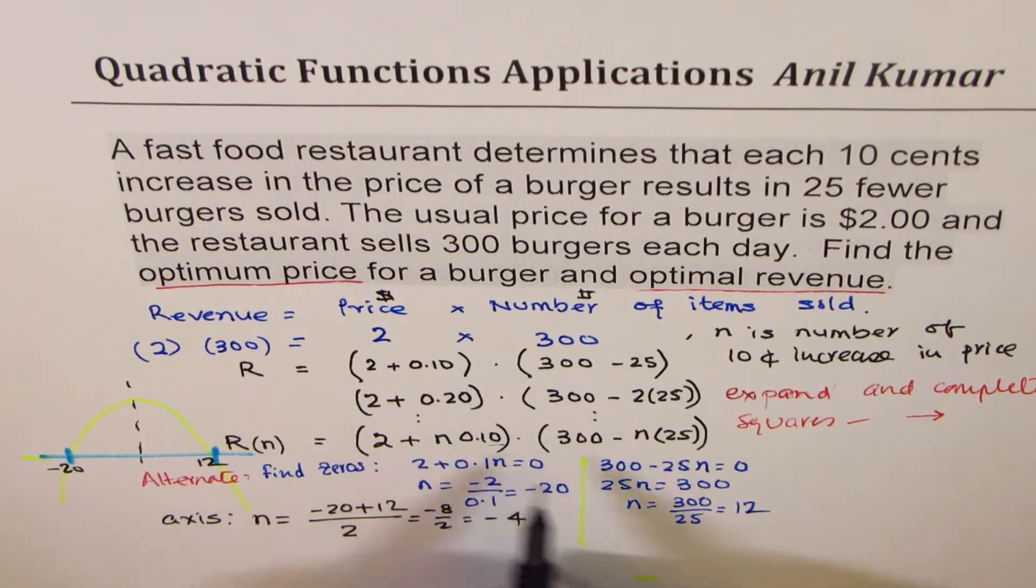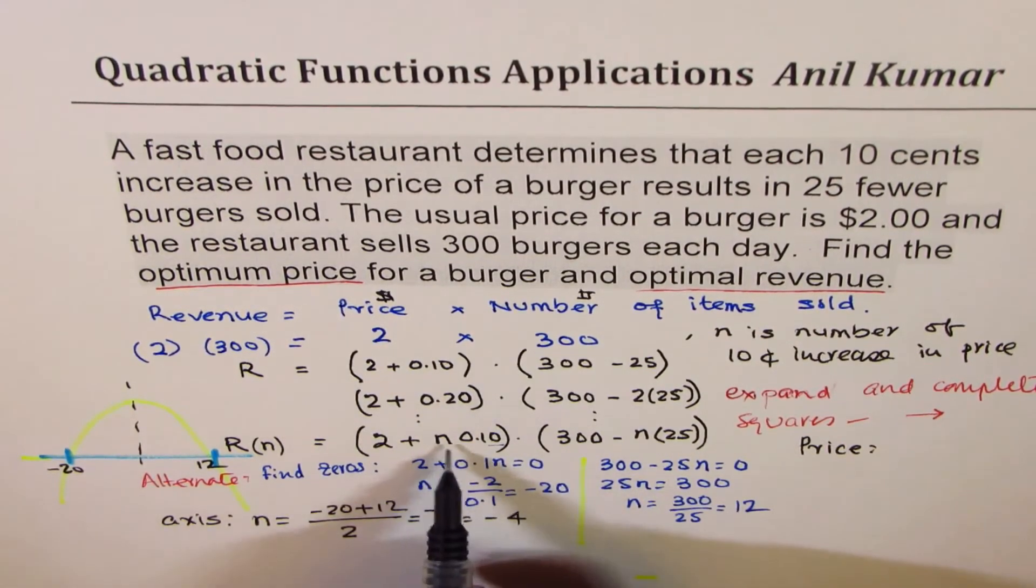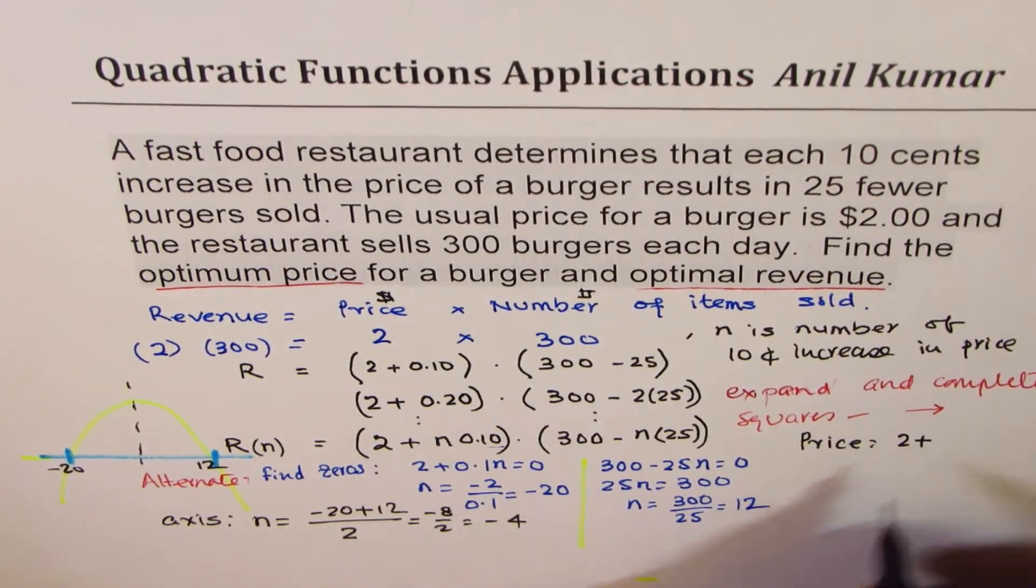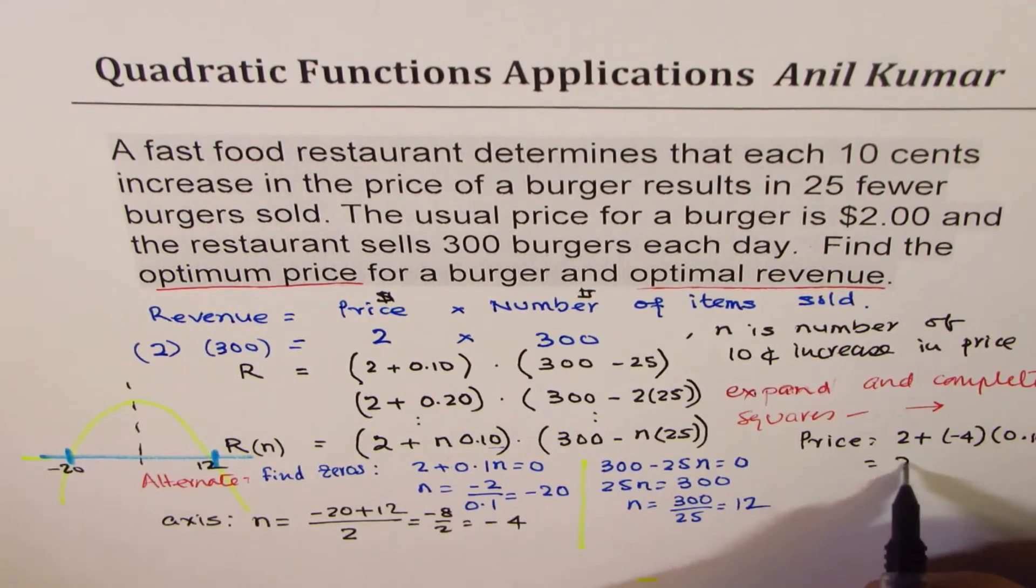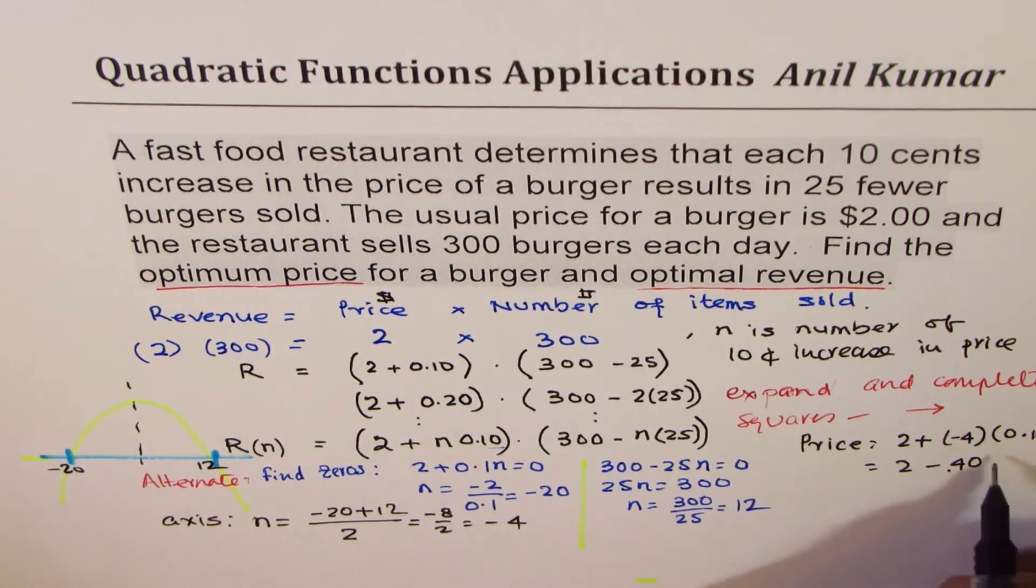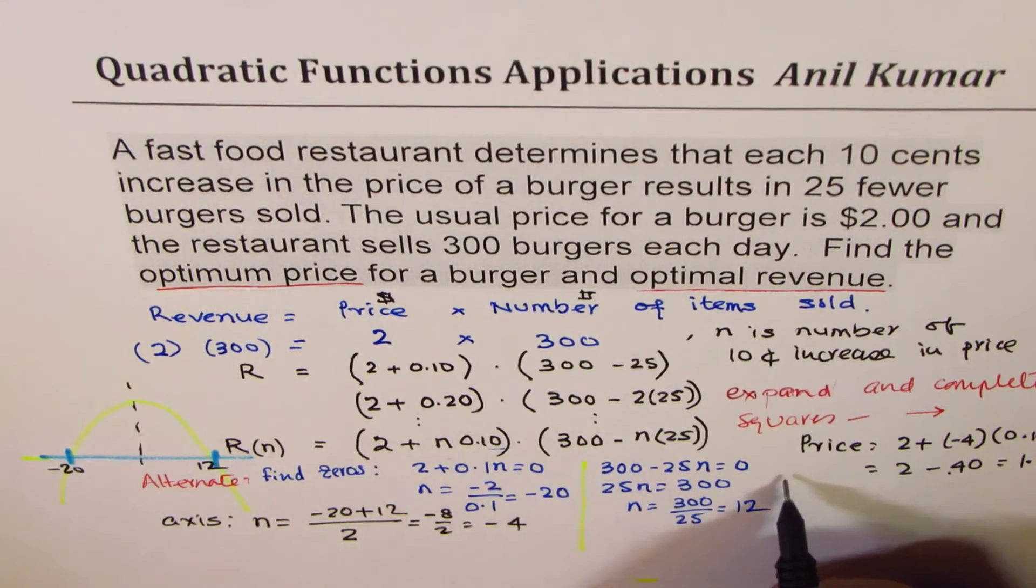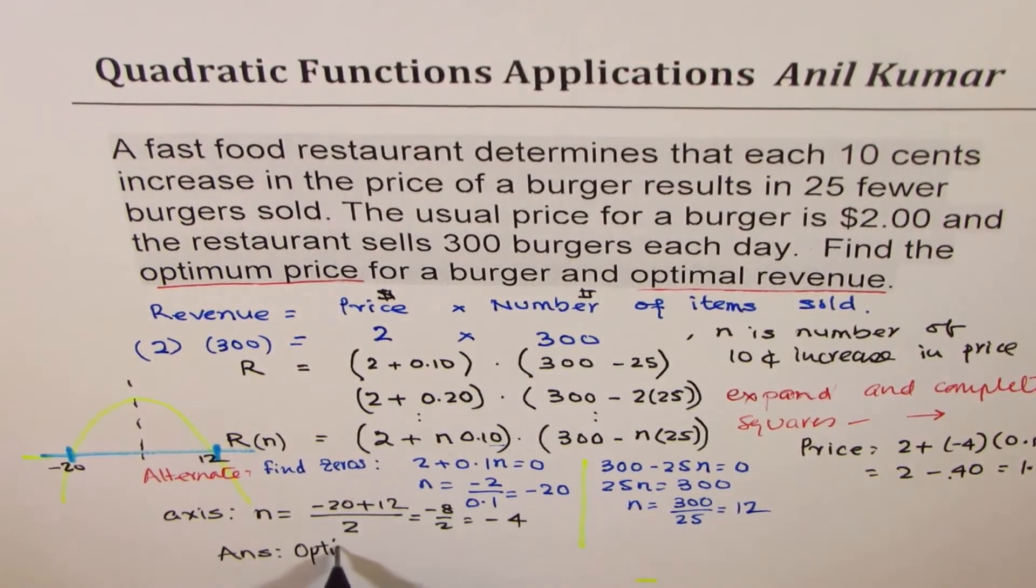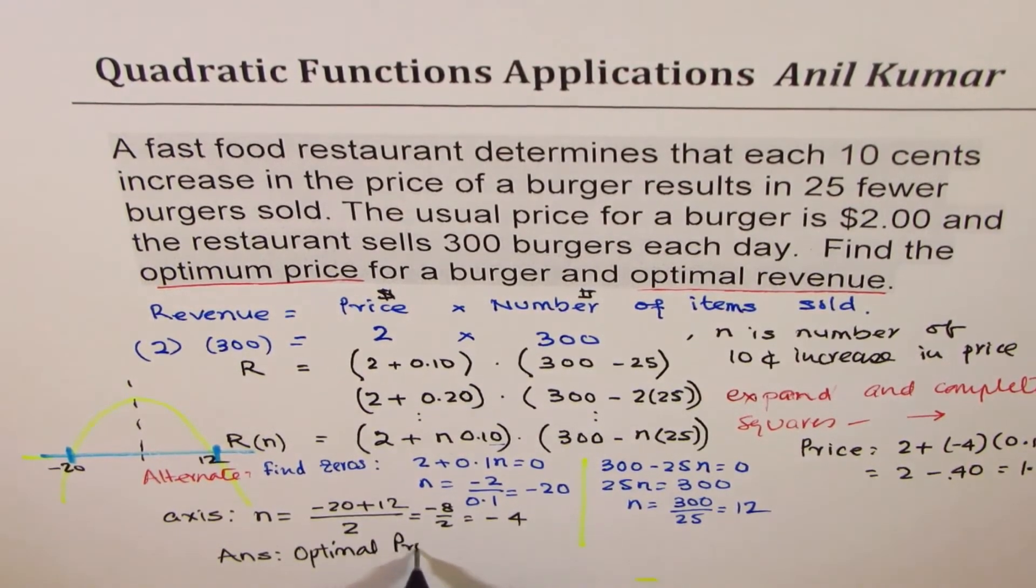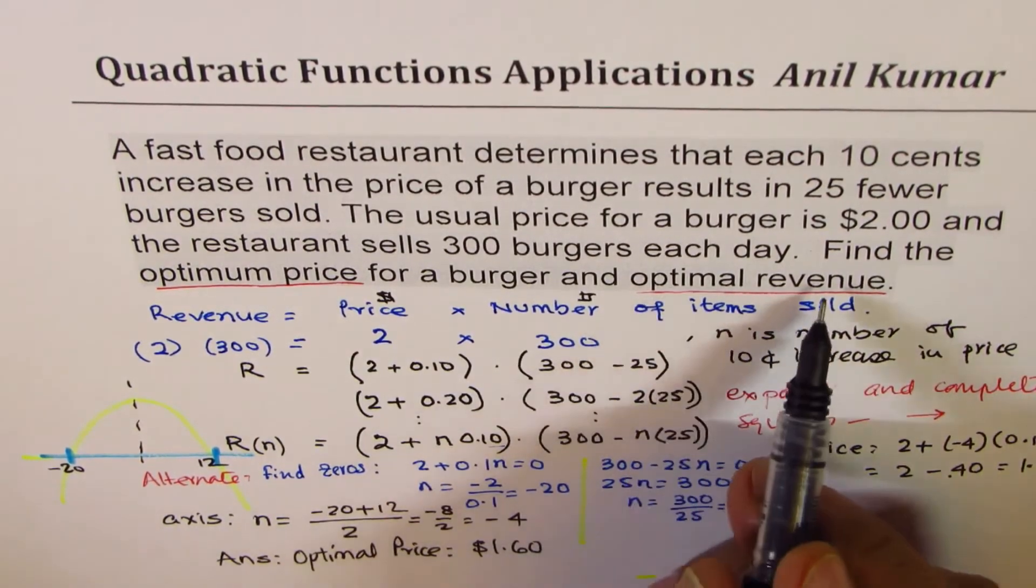So when n is minus 4, what is the price? The price is 2 plus n times 0.10, so 2 plus minus 4 times 0.10, which is 2 minus 40 cents or 0.40, which is $1.60. So our answer is optimal price is $1.60.